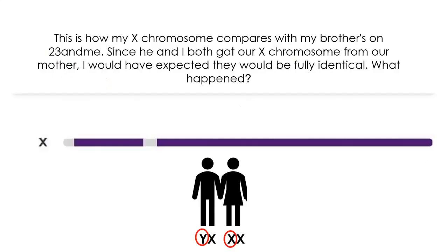The question was asked: this is how my X chromosome compares with my brother's on 23andMe. Since we both got our X chromosomes from our mother, I would have expected that they would be fully identical. What happened? And the answer has to do with DNA recombination.